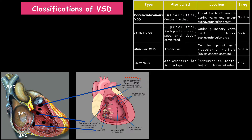The next is the perimembranous VSD, also called infracrystal VSD or conoventricular VSD. The conoventricular VSD terminology is given specifically to one of its subtypes. The perimembranous VSD is divided into two types: aligned and mal-aligned. The aligned VSD is called membranous VSD, and the mal-aligned VSD is called conoventricular VSD. The location is in the outflow tract, beneath the aortic valve and under the supraventricular crest. As marked in the diagram, the perimembranous VSD is the commonest VSD in fetal ultrasound, occurring in around 70 to 80% of cases.